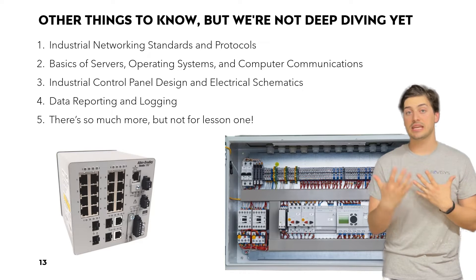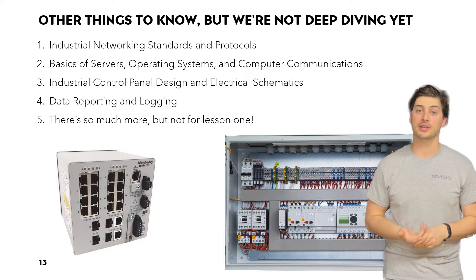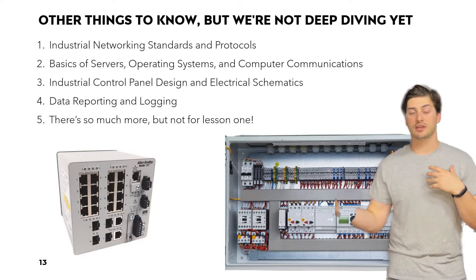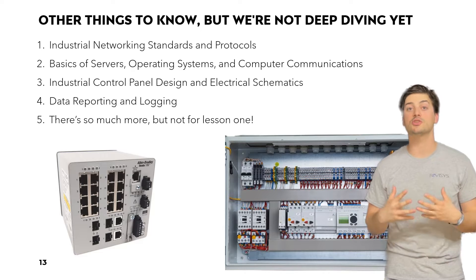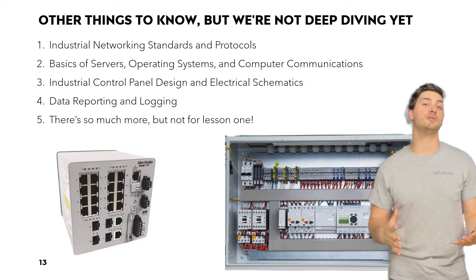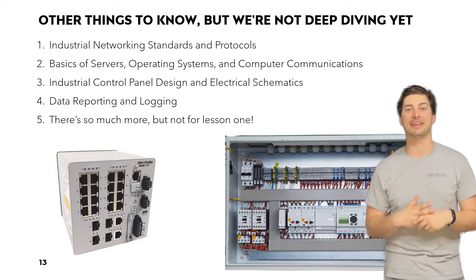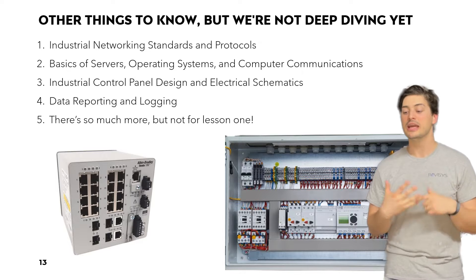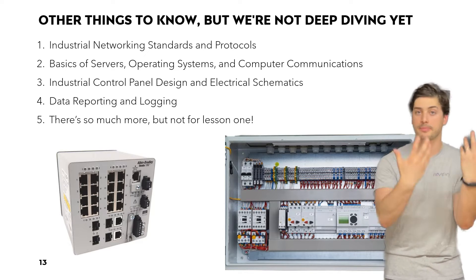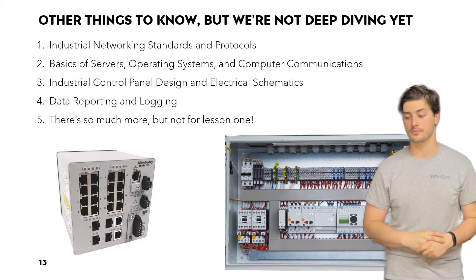Other things to keep on your radar — we won't do a deep dive in episode one — include industrial networking standards and protocols, basics of servers, operating systems, and computer-to-computer communications, industrial control panel design and electrical schematics, which is guaranteed to come up in a career as an automation engineer, and data reporting and logging: historians, SQL databases, creating Power BI reports and trends. These are all super important, and there's much more, but not for lesson one.